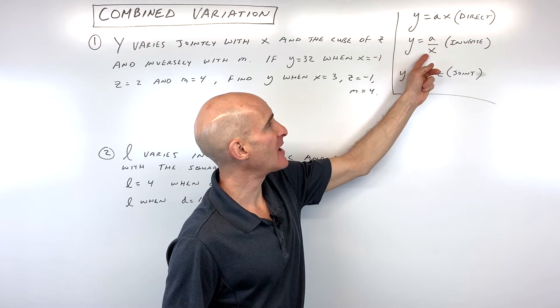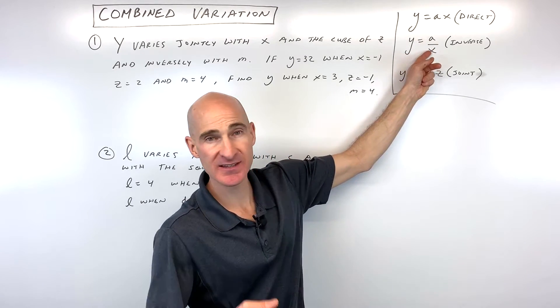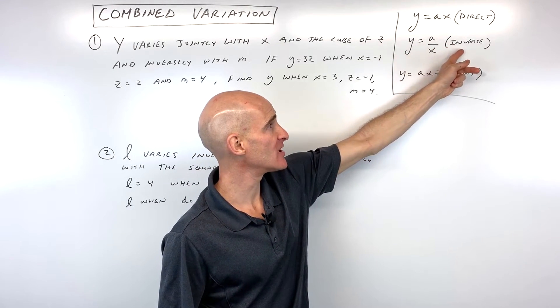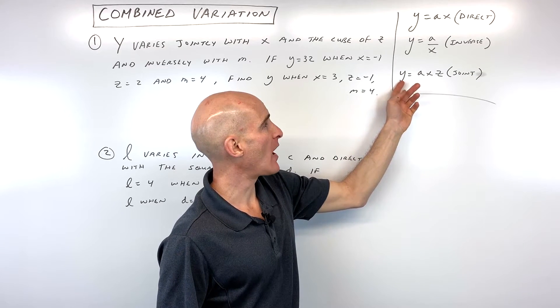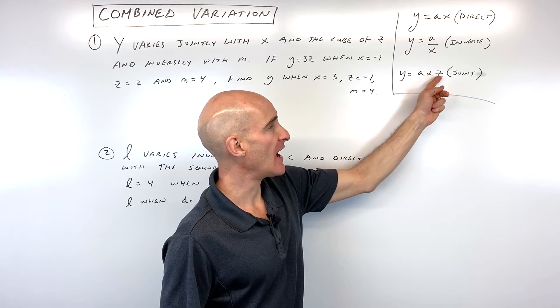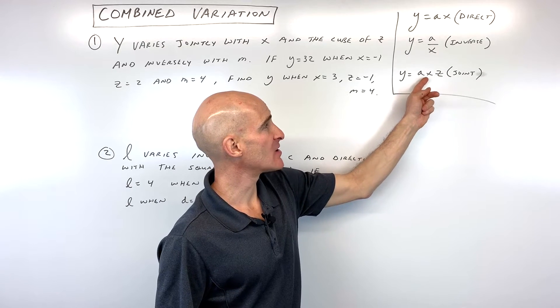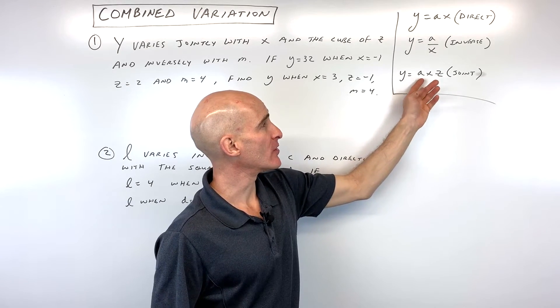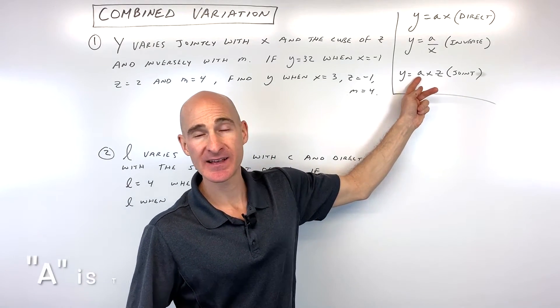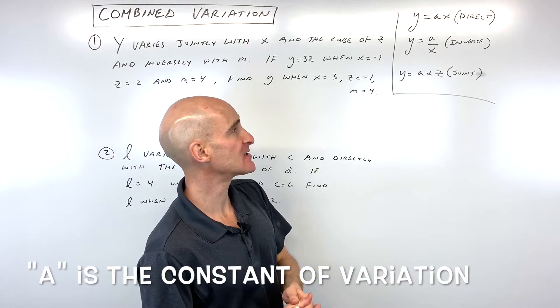Inverse, y equals a divided by x. So you can see that the variable x is in the denominator when it's inverse. And then when it's joint, you can see y varies jointly with x and z. You can see x and z are multiplied together. They're in the numerator and you also have that constant of variation. So you're always gonna have that a value in there, that constant.